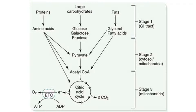In the cytosol, monosaccharides are mostly converted to glucose form — for example, galactose and fructose. If not, they are converted to glucose form in the liver. In stage 2, in the cytosol, glucose is converted to pyruvate by glycolysis. Glycerol is also converted to pyruvate. Fatty acids are transferred by the carnitine shuttle mechanism to mitochondria, where they are degraded by beta-oxidation, yielding acetyl-CoA.